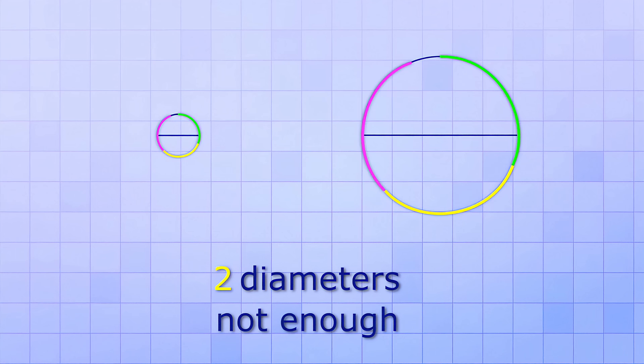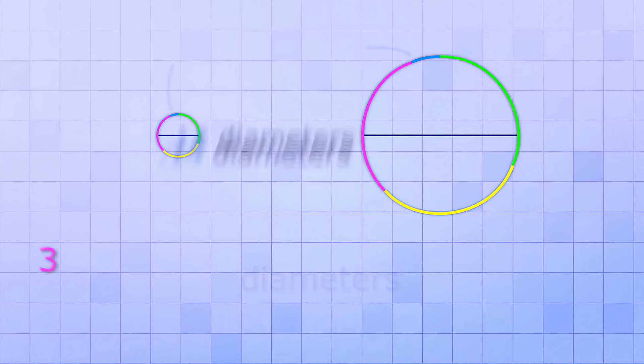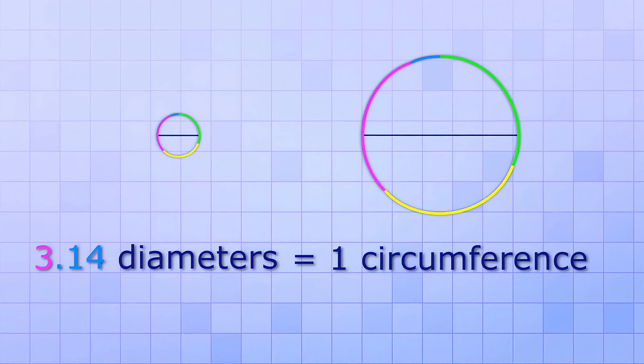Oh, so close! Three diameters is almost enough, but it looks like we're going to need just a little bit more to form a full circumference. That little bit more turns out to be about 0.14 diameters. That means that it takes 3.14 diameters to equal one circumference for any circle, big or small. So the value of Pi is always 3.14.